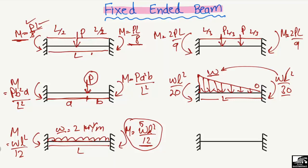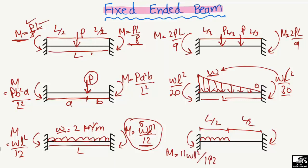The last case is when a uniformly distributed load W acts only over half the span (L/2), with no load on the other half. In this case the moment values at the two ends are different: the moment at the loaded end equals 11WL²/192, while the moment at the unloaded end equals 5WL²/192. Here W is the uniformly distributed load on the half-span and L is the total length of the beam.